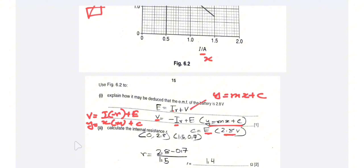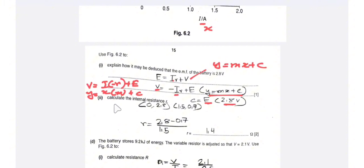Using the equation Y = MX + C, we can see that the EMF, which equals the Y-intercept, is 2.8V.